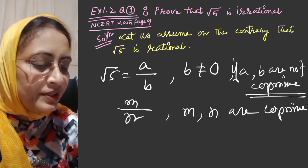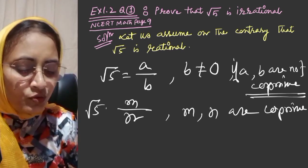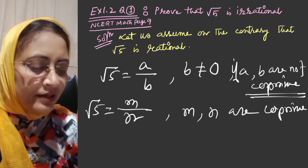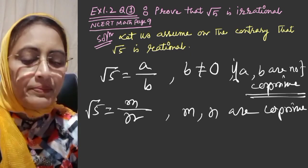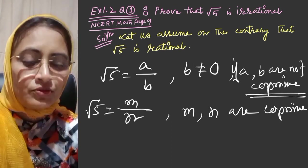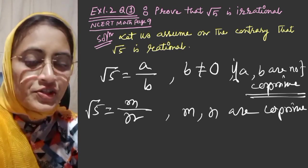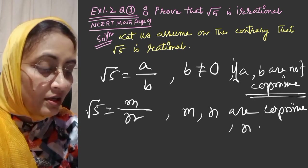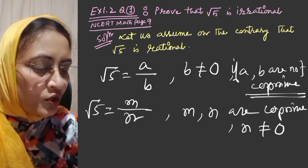If a and b are not coprime, then root 5 equals m by n where m and n are coprime. That means it's in lowest terms, and n is not equal to 0.